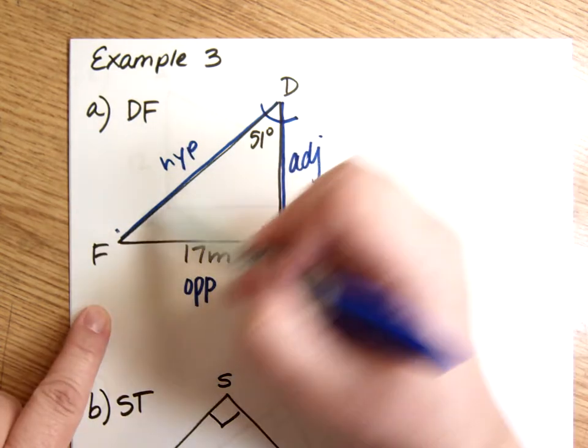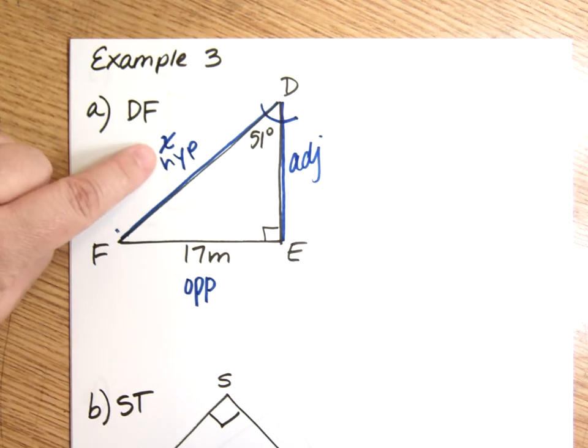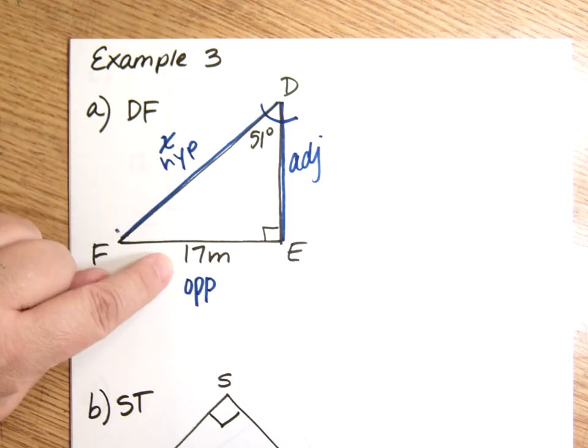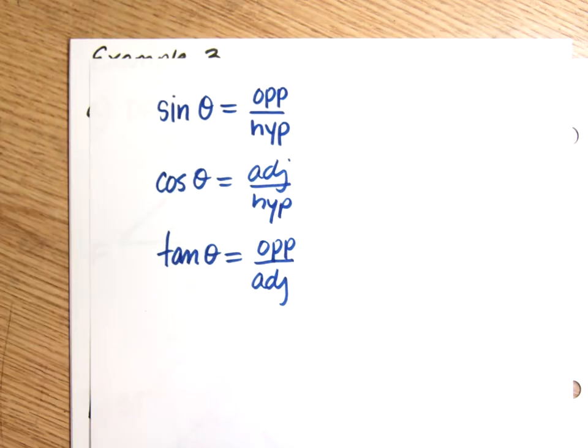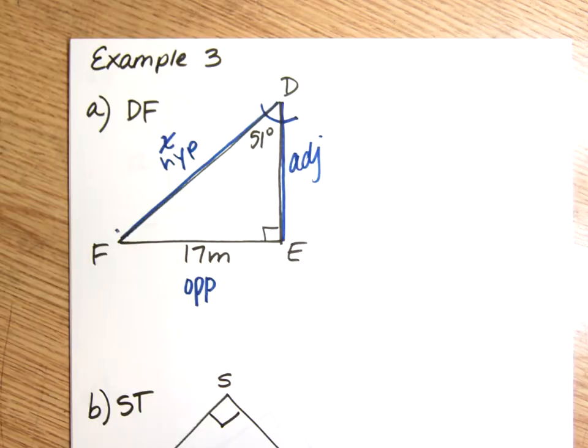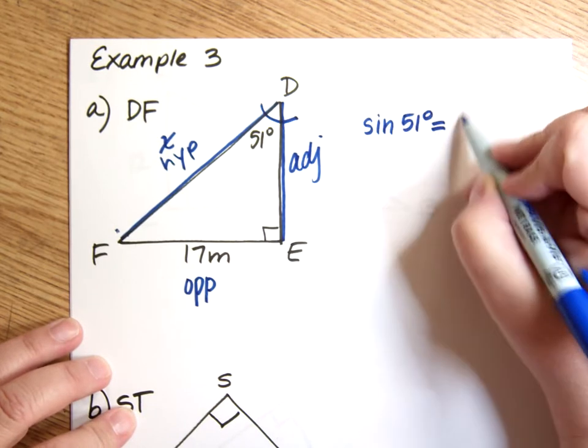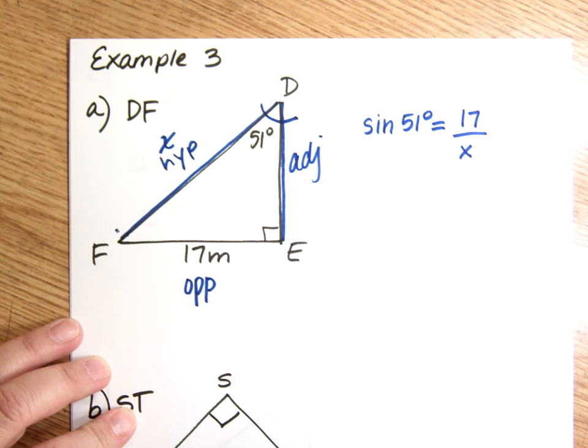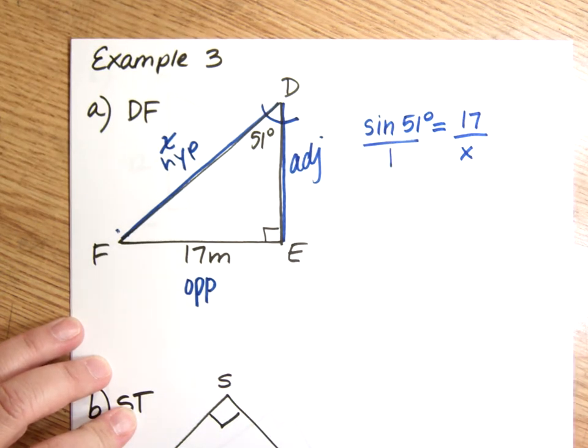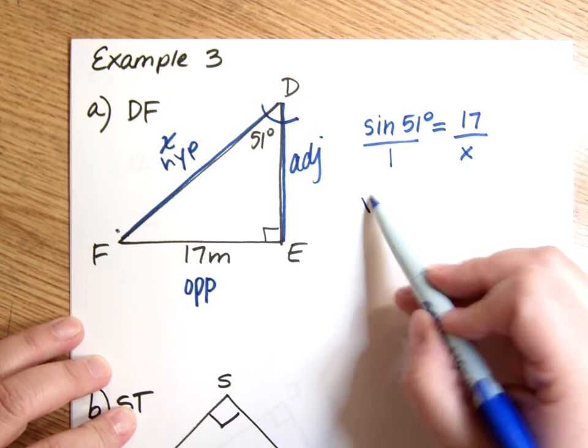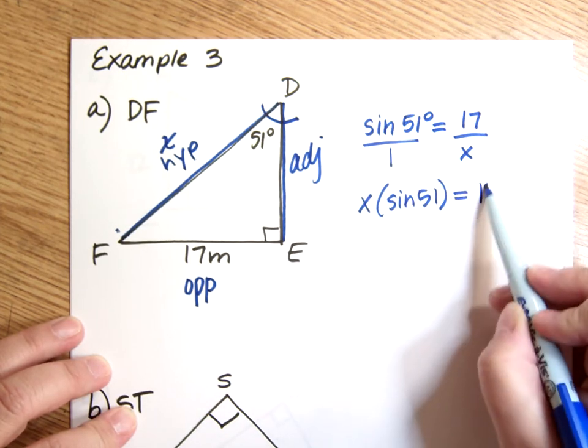If we want DF, that's the hypotenuse. That's going to be my X. So I need to find the hypotenuse, and I have the opposite. So, once again, I'm using sine because it deals with opposite and hypotenuse. So I'm going to say sine 51 equals opposite over hypotenuse. And that's my equation. Now I'm going to go ahead and put that over 1 so that I can cross multiply, and I get X times sine 51 equals 17 times 1.